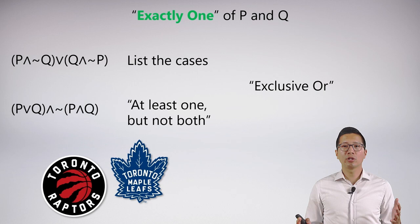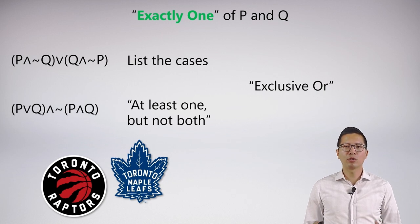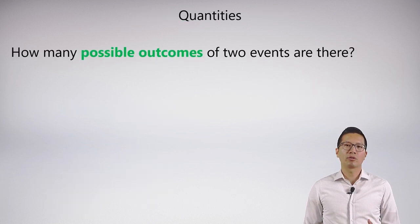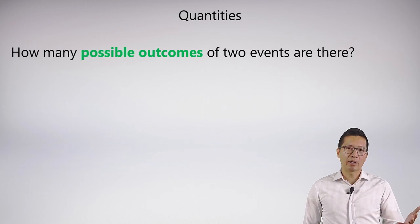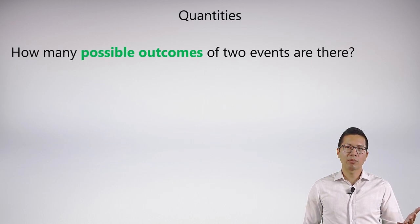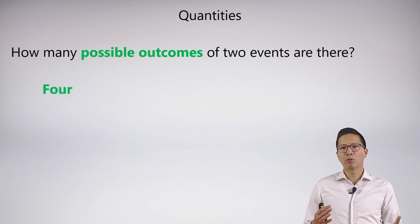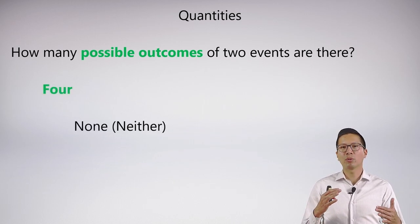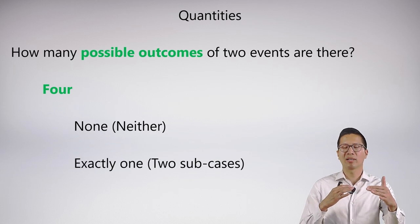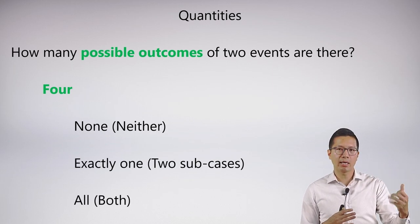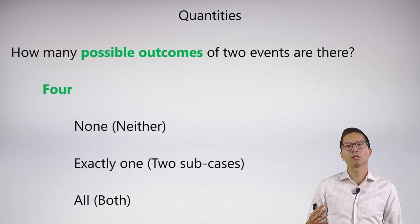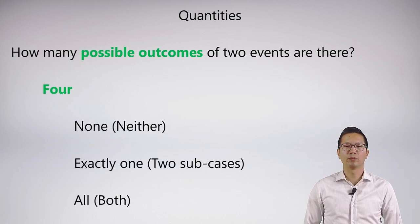So going back to the question: how many possible outcomes of two events are there? It turns out there are actually four. None of them could come to pass, both of them, or exactly one — but as we've seen, exactly one has two explicit sub-cases: it could be the P case or the Q case that is true.